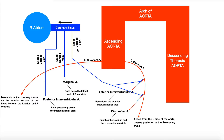There are three major cardiac veins: the middle cardiac vein, the small cardiac vein, and the great cardiac vein. As you could imagine, the small cardiac vein is the smallest and the great cardiac vein is the biggest. The size of those veins actually matches the artery or arteries that they drain blood from.